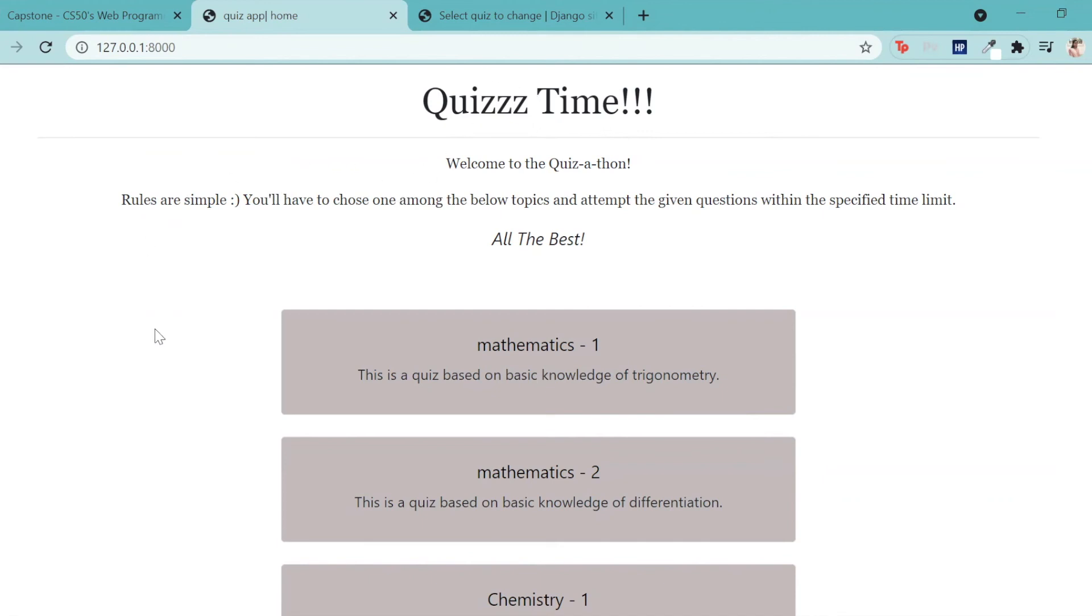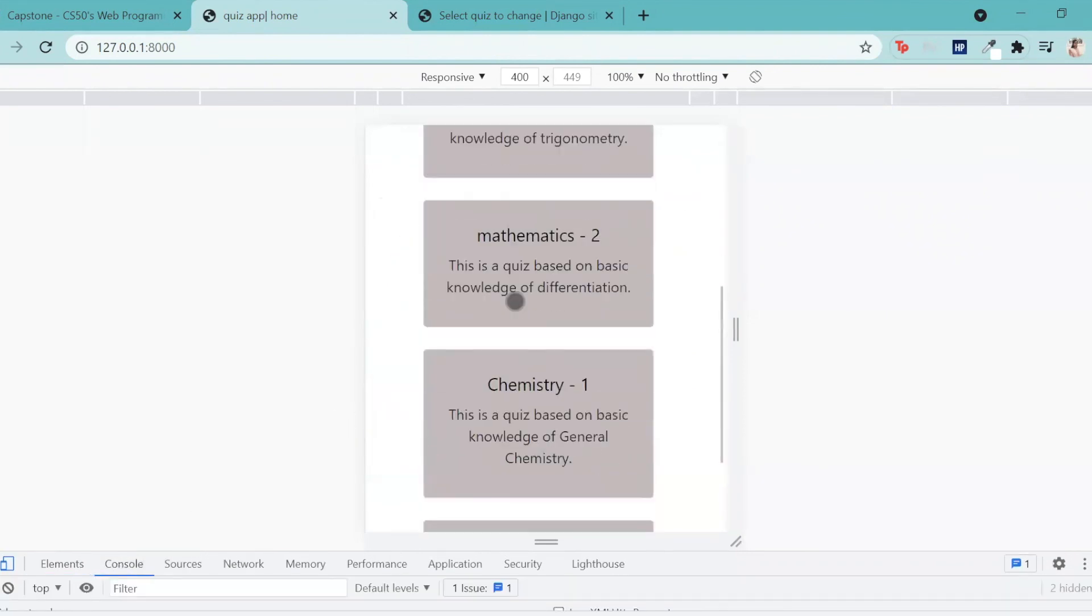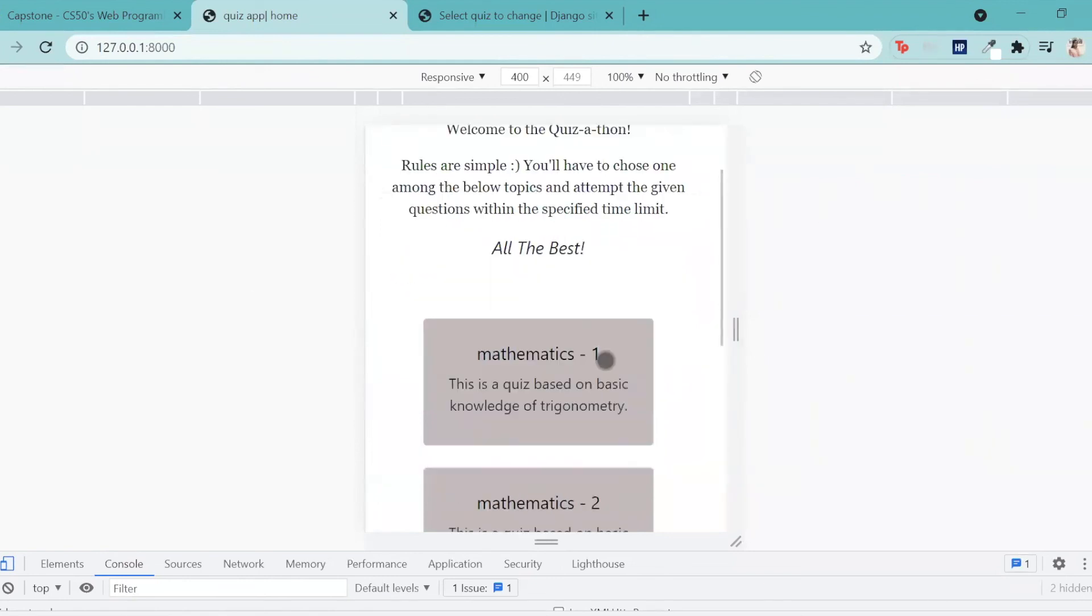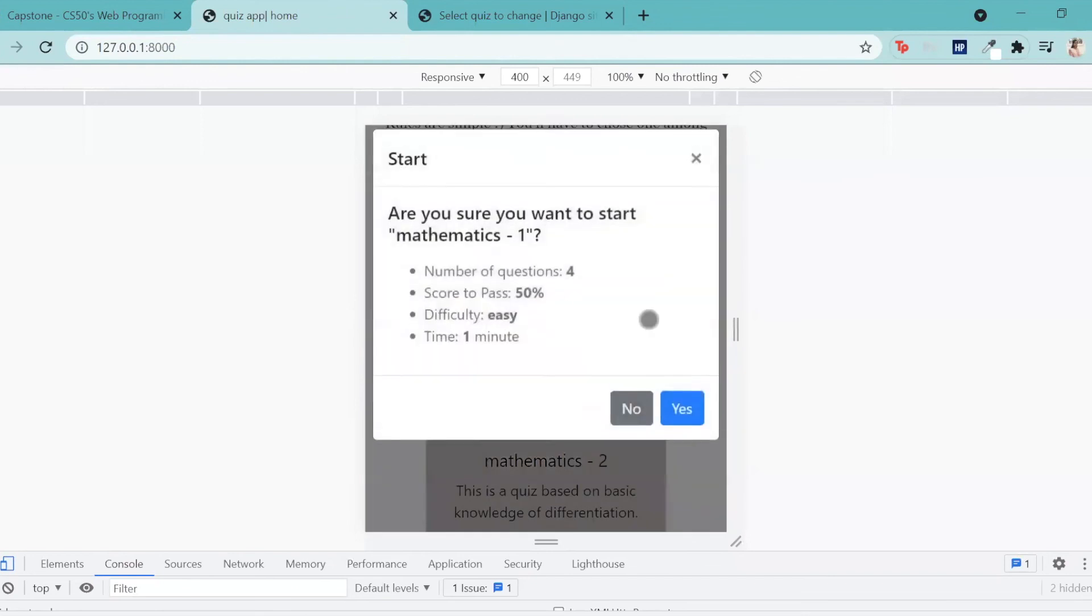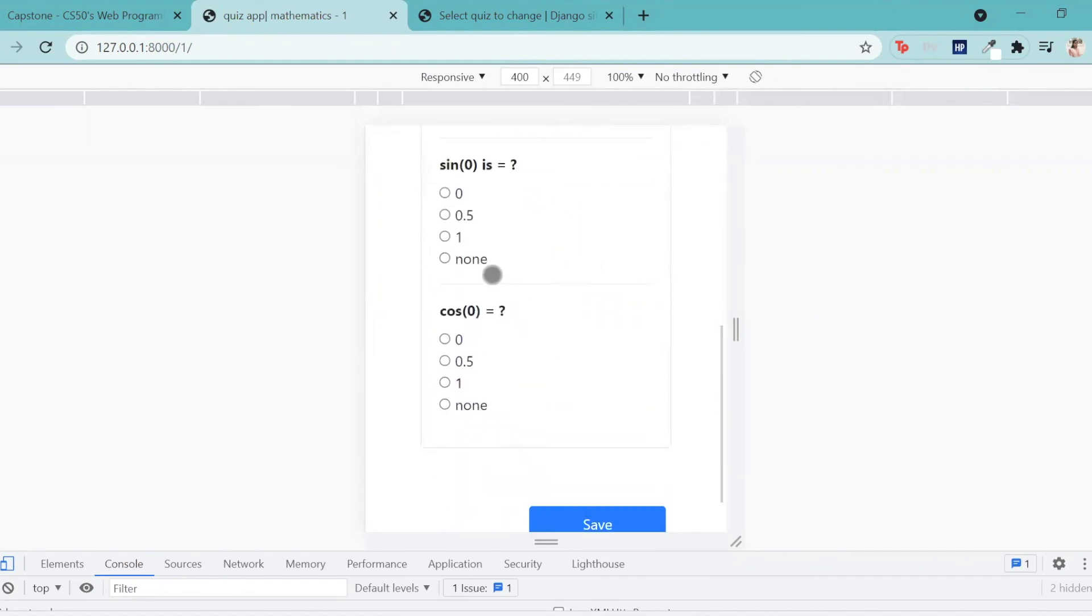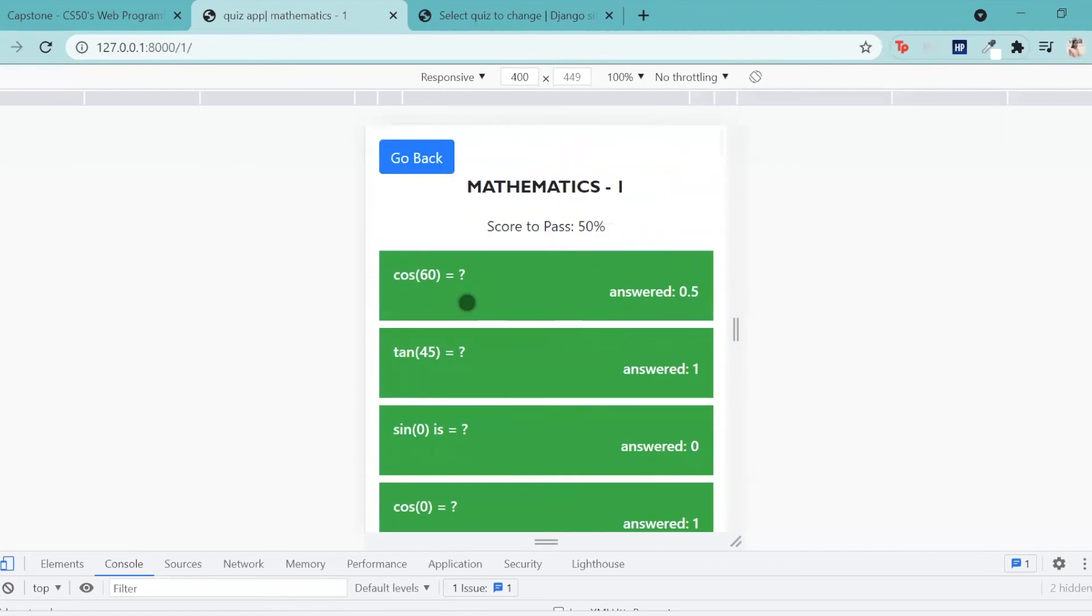Now I would like to show you my mobile responsiveness. As you can see, this is the size of a mobile phone. I go to any one of the quizzes. Yes. Timer. Go back. Mathematics one. I attempt the quiz. I click on save. And voila, this is my results page. Thank you.